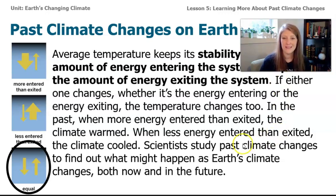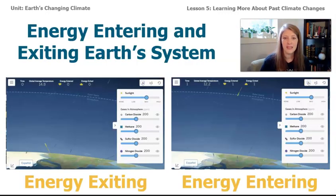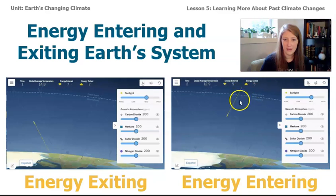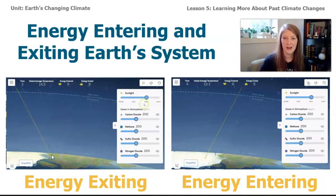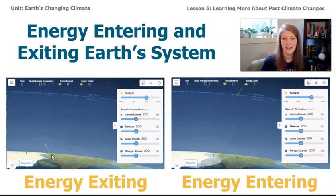In our last lesson, lesson 4, we also looked at the sim. When we were looking at the sim, we discovered that you can have energy coming into the system — there's an energy arrow showing that — and you can also have energy exiting the system. What we just read in the article explains that when these things change, the global average temperature can change, and when they stay the same, you can have equilibrium.